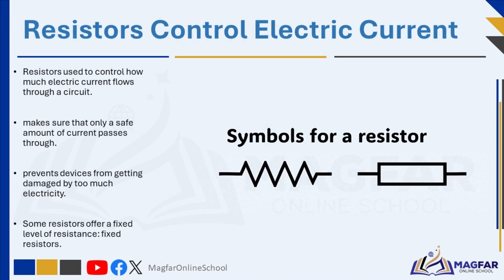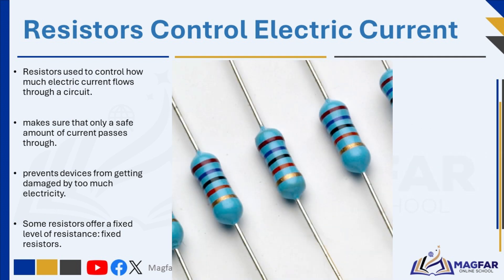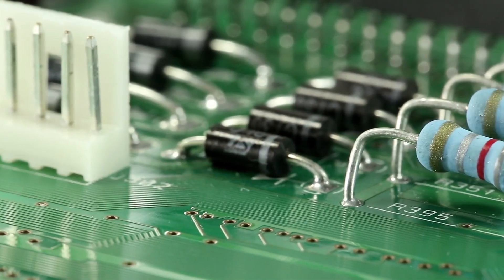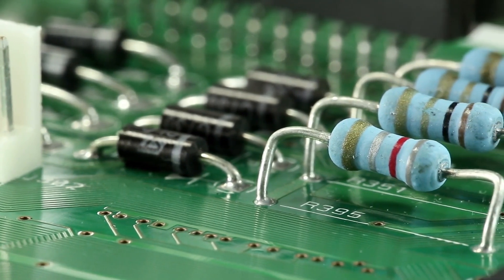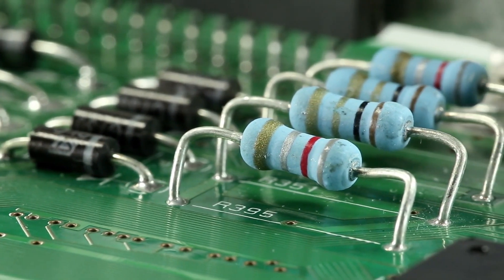In an electric circuit, resistors play a very important role. They are used to control how much electric current flows through the circuit. When a resistor is placed in the same circuit as another electrical component, it helps make sure that only a safe amount of current passes through that component, preventing it from getting damaged by too much electricity. Some resistors are specially made to offer a fixed level of resistance even when the temperature changes — these are called fixed resistors. You can often spot resistors on a computer sound card by looking for small components with colorful stripes, which help identify the resistor's value.